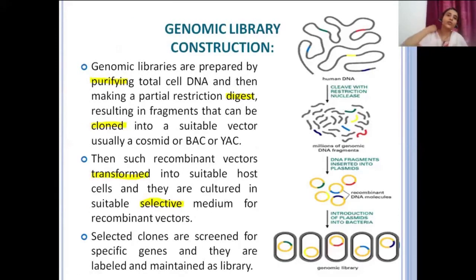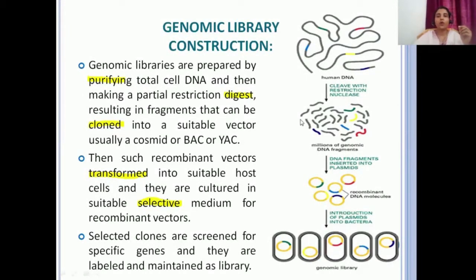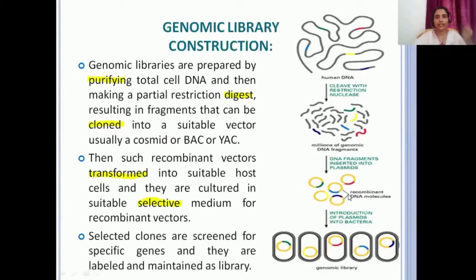Genomic libraries are prepared by purifying the total cell DNA and then making a partial restriction digest. You have your human DNA, you cleave it with restriction nucleases and get small pieces. That DNA can then be cloned into suitable vectors — it could be a cosmid, or as we will be studying, a BAC or YAC vector.